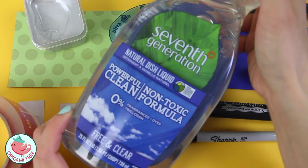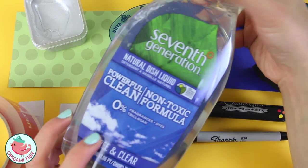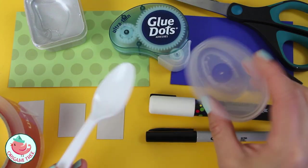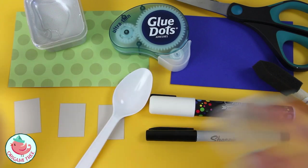Some dish liquid, I like to use 7th generation because it doesn't have a scent and is also natural. A plastic spoon and also a little cup or container to hold your paints. So now that we have everything, let's get started.